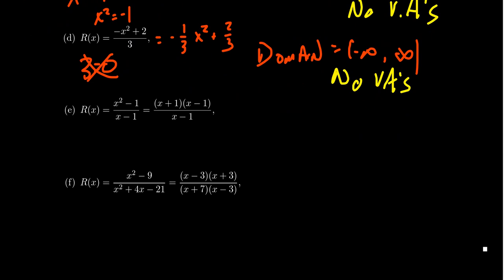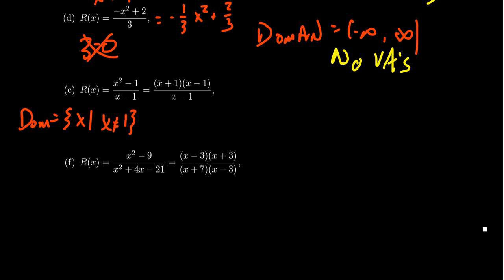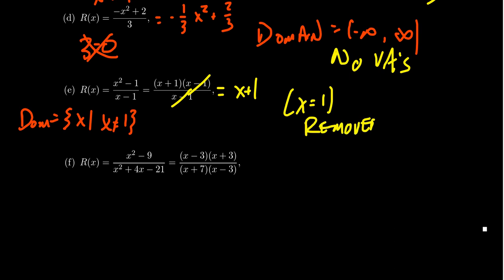Now let's get to the real heart of the matter. Take R(x) = (x² − 1) / (x − 1). Investigating the domain using only the denominator, the domain is all real numbers except x = 1. But when you factor the numerator, x² − 1 is a difference of squares giving (x + 1)(x − 1). The (x − 1) cancels, and in lowest terms we get the polynomial x + 1. This means x = 1 is actually a removed point — the discontinuity disappears when you simplify. The graph will show a missing point, not the infinite rip of a vertical asymptote.